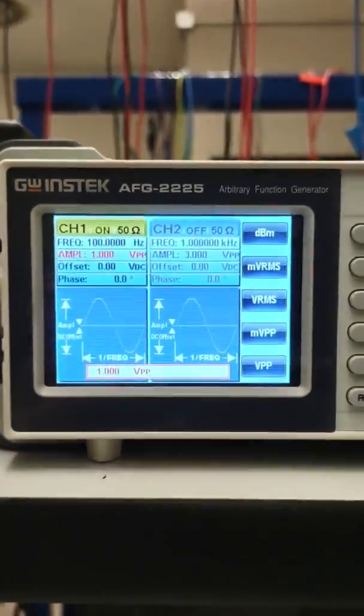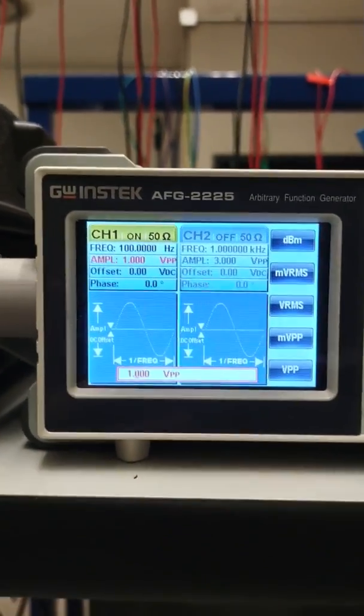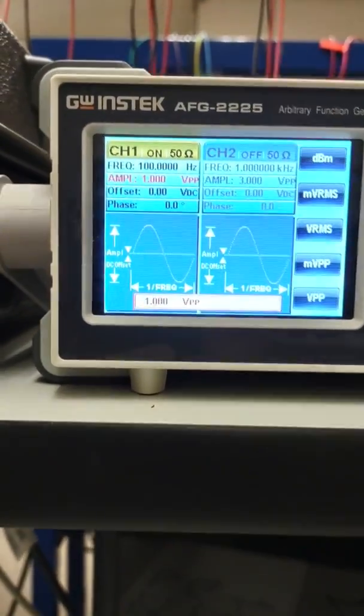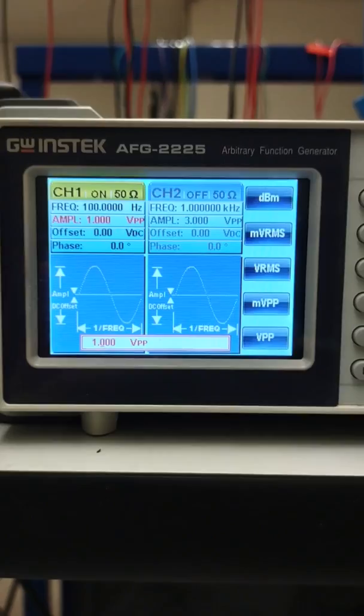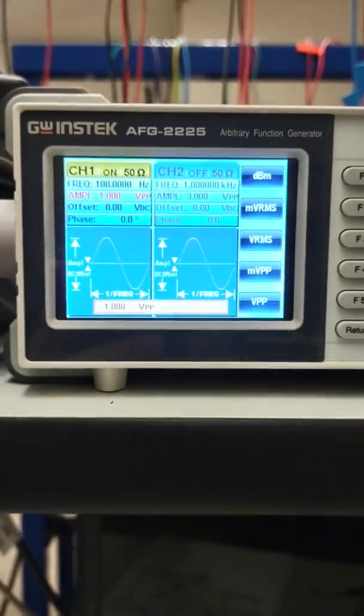I think the terminology here where it says amplitude of one might be correct, but the peak to peak voltage is currently outputting double what is displayed here, which is a common problem with these machines in the lab, so you might want to look out for that.